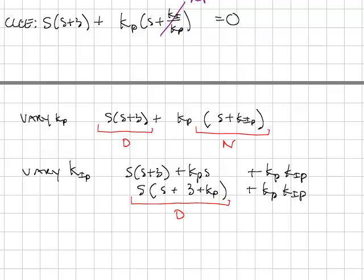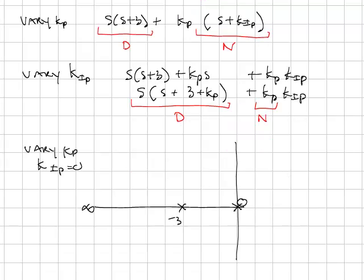If I want to vary Kip, I use this form. This becomes my D polynomial. This becomes my N polynomial. Again, remember, we're calling these D and N because that would correspond to the numerator and denominator of an equivalent system if you put it in a unity feedback form and did a traditional root locus method on it.